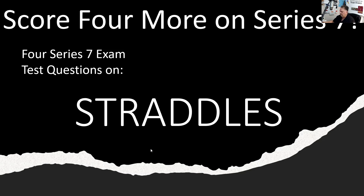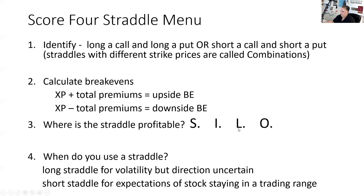Here are the four things you have to be able to do on a straddle — the Score Four Straddle Menu. First, we have to be able to identify a straddle on the test. We're straddling the strike price line. It's when you're long two different types of contracts — calls and puts. A long straddle is when you're long a call and long a put. A short straddle is when you're short a call and short a put.